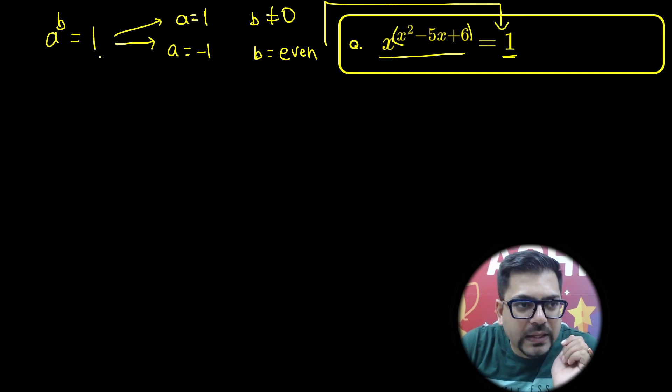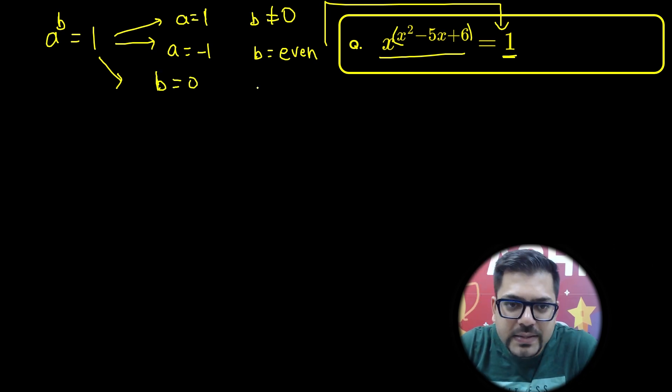And then the third possibility is that your exponent can be 0. Whenever your exponent is 0, you only have to take care that a should not equal 0, because 0 raised to power 0 will not give you 1. So in these three possibilities you will get the output as 1.